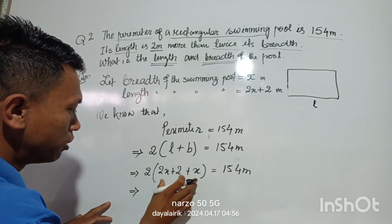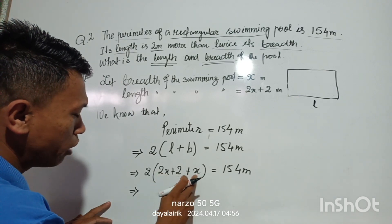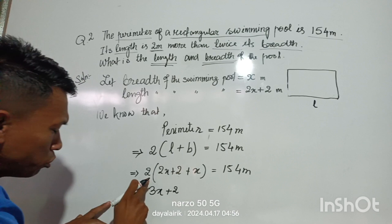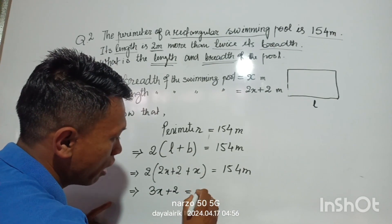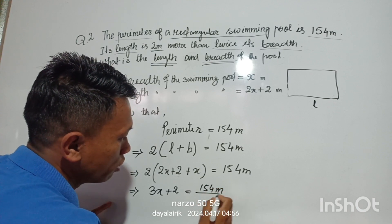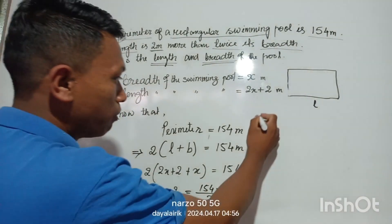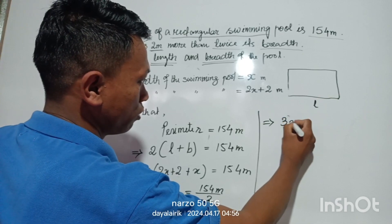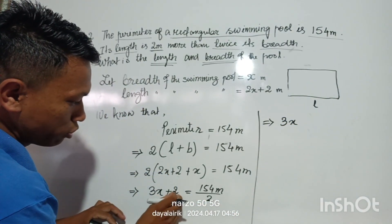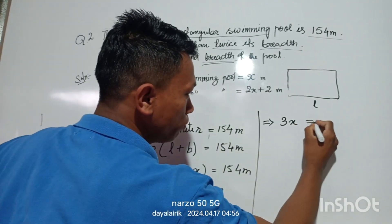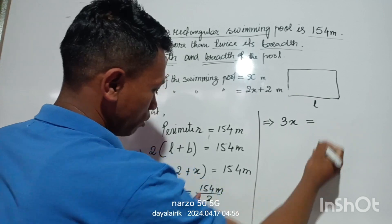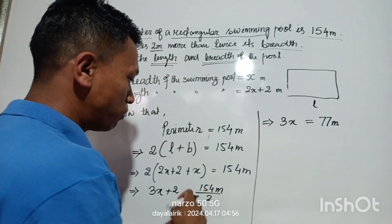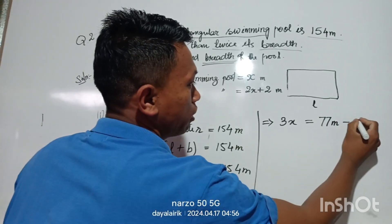Simplifying: 2x plus 2x plus 2 gives 6x plus 4. Then divide 154 meters by 2, giving 77. So 6x equals 77 minus 2, which is 75.